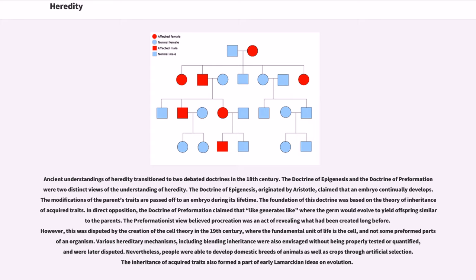In direct opposition, the doctrine of preformation claimed that like generates like where the germ would evolve to yield offspring similar to the parents. The preformationist view believed procreation was an act of revealing what had been created long before. However, this was disputed by the creation of the cell theory in the 19th century, where the fundamental unit of life is the cell and not some preformed parts of an organism.